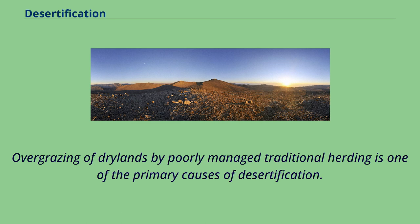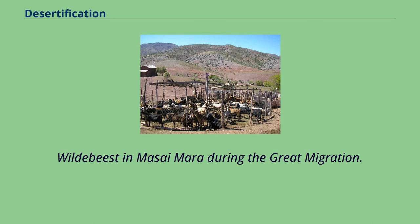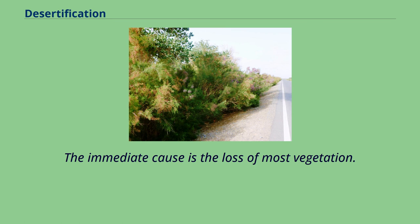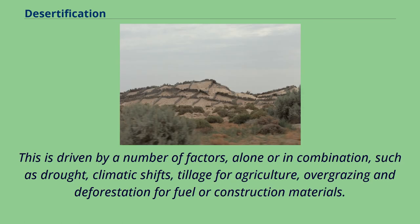Overgrazing of drylands by poorly managed traditional herding is one of the primary causes of desertification. Overgrazing is not necessarily caused by nomadic grazers in large traveling herd populations. The immediate cause is the loss of most vegetation, driven by a number of factors alone or in combination — such as drought, climatic shifts, tillage for agriculture, overgrazing and deforestation for fuel or construction materials.